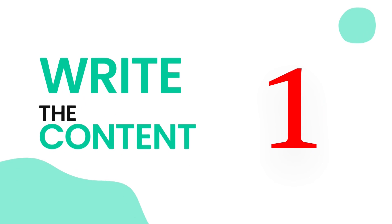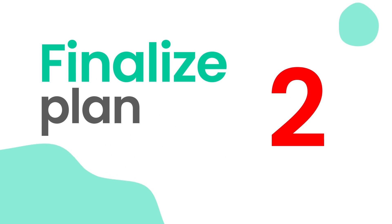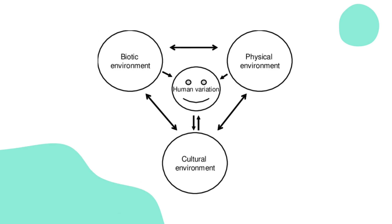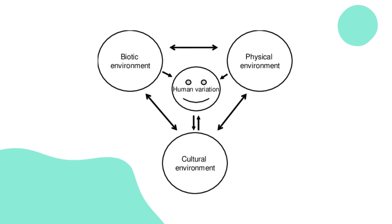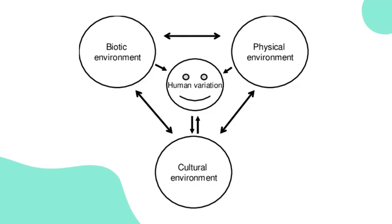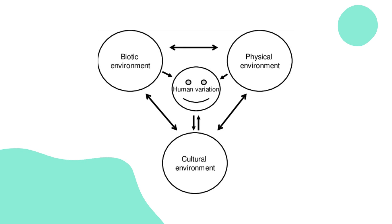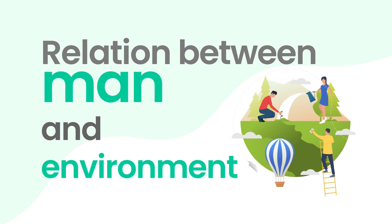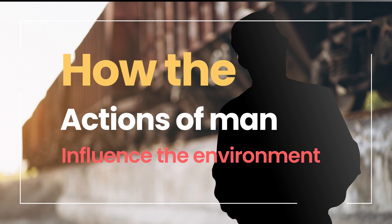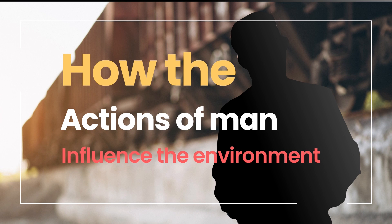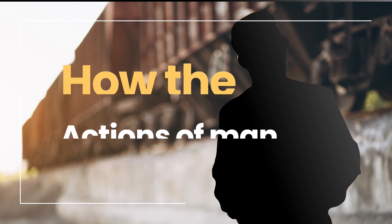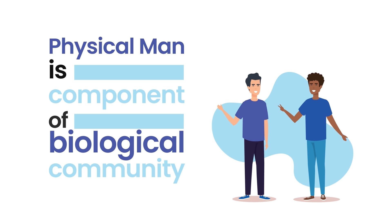The next step is writing the content and finalizing the plan. While writing the content, the planner can elaborate the concept of sustainability, the concept of environment including the biotic and abiotic components, the cultural environment, the social environment and their relationships, human variation, and human interaction within biological, physical, and social environments. They can also explain the relationship between man and environment — how the actions of man influence the environment and in turn influence society, as man is also a biological community.